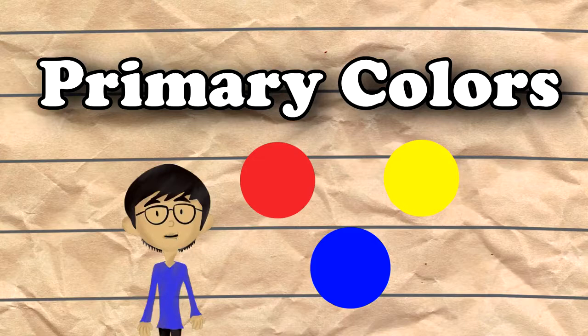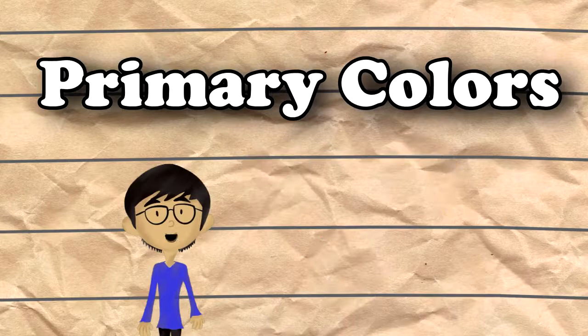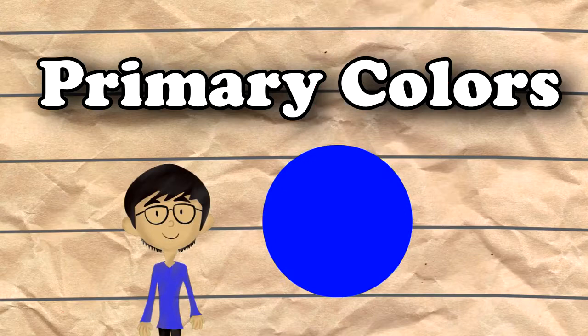Why are they called the primary colors? They are called the primary colors because they are colors that cannot be made by mixing other colors. Let us see an example of each color. An example of red is an apple. An example of blue is a blue fish. An example of yellow is a banana.